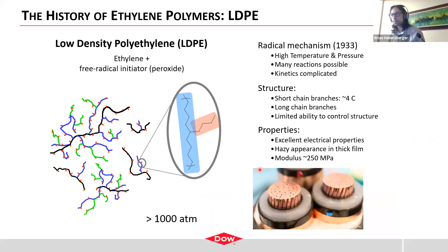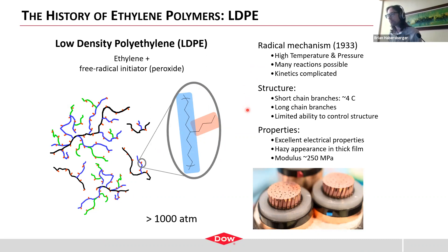LDPE is the next polymer on our list. This is polymerized with a free radical initiator combined with ethylene. The different colors here try to show the different generations of branching in the molecule — you can have branches upon branches. This is a saturated hydrocarbon chain with small chain branches that disrupt and control crystallinity. It's a relatively kinetically controlled process, with little ability to design the molecular structure in detail. It does have excellent electrical properties because it has so few ingredients. Unfortunately for PV, it's relatively hazy due to crystallinity, and it's also quite stiff. One application is insulation for wire and cable.